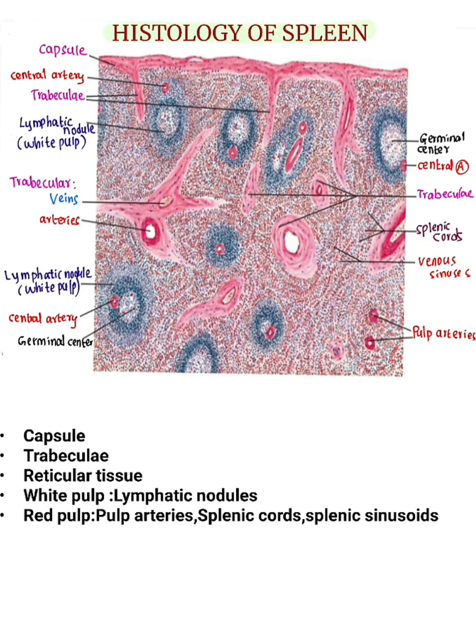Splenic cords contain lymphocytes, plasma cells, macrophages, and a large number of red blood cells. Splenic sinusoids are blood-filled venous sinuses that separate the splenic cords.